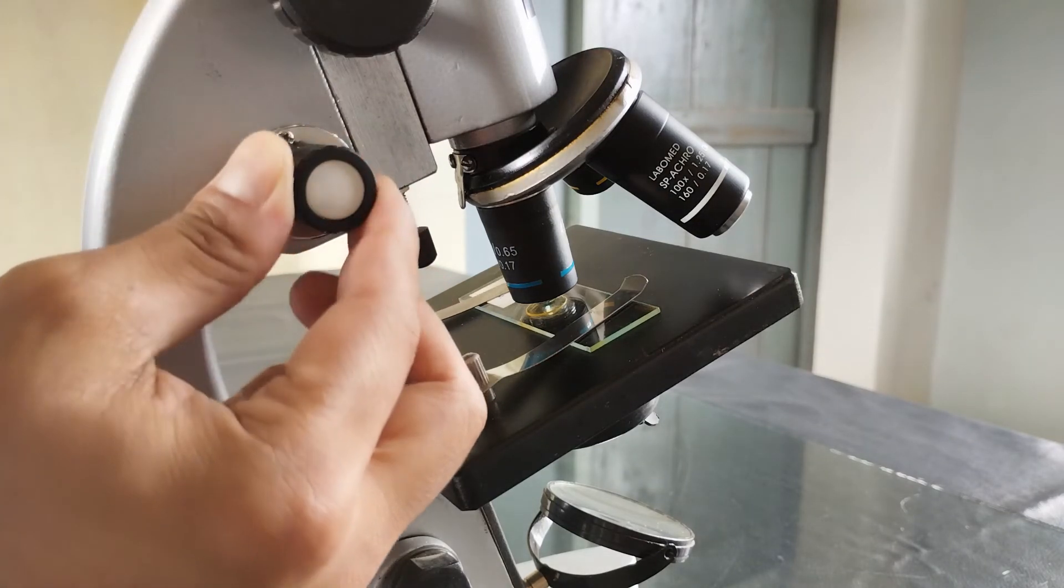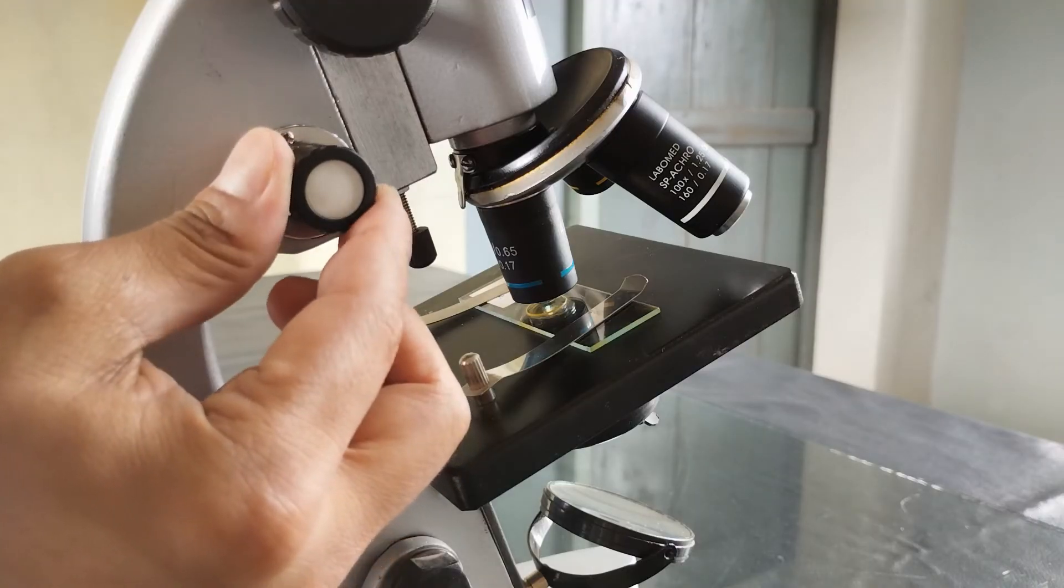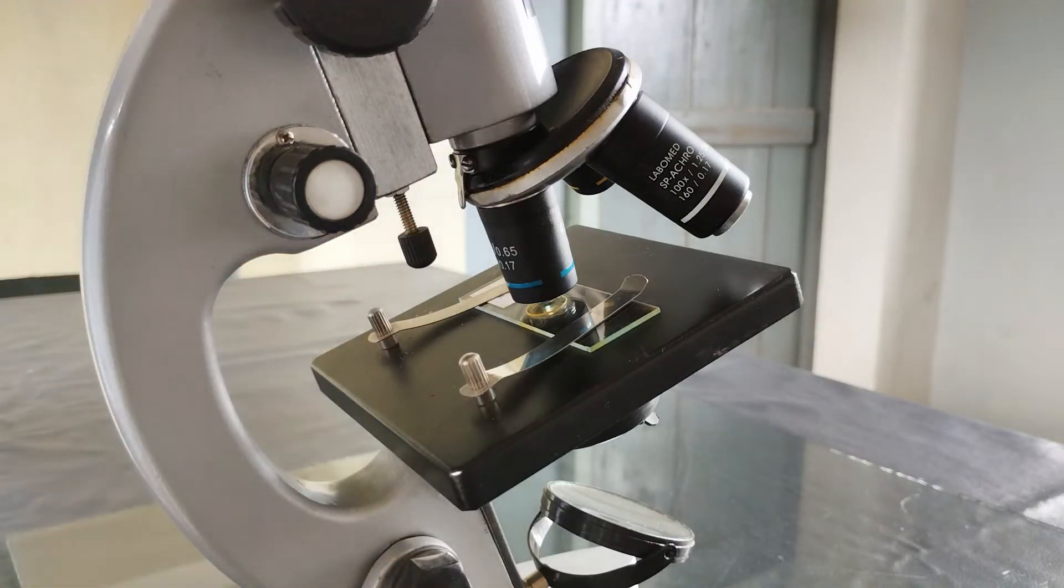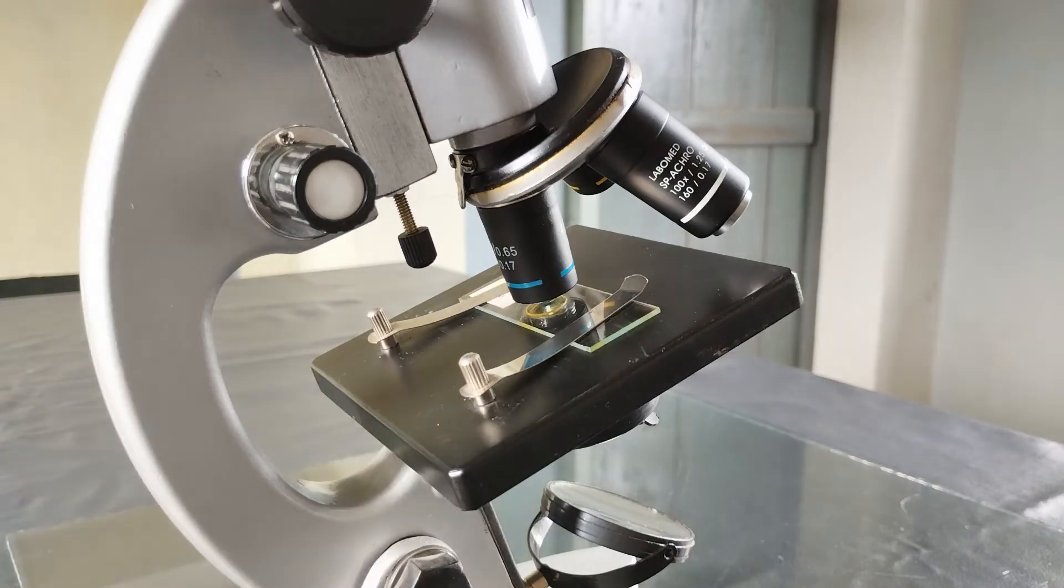As the focusing distance for high power objective lenses is barely within a millimeter region, using the coarse adjustment knob with high power objective lenses can result in accidental overshooting of the lens by ramming it into the slide surface, resulting in breakage of the lens and or the slide.